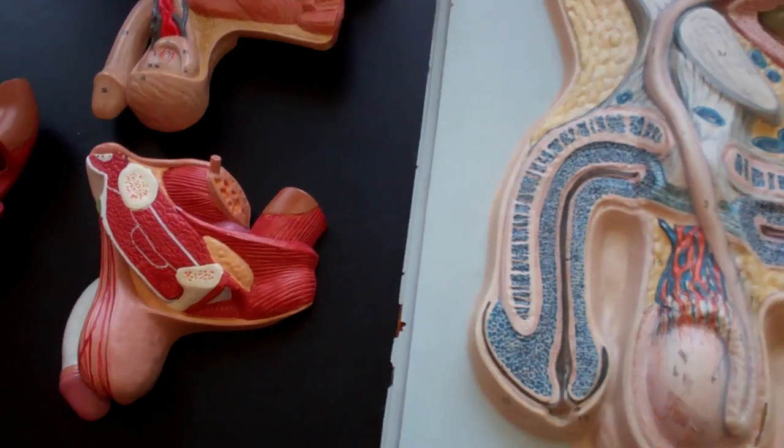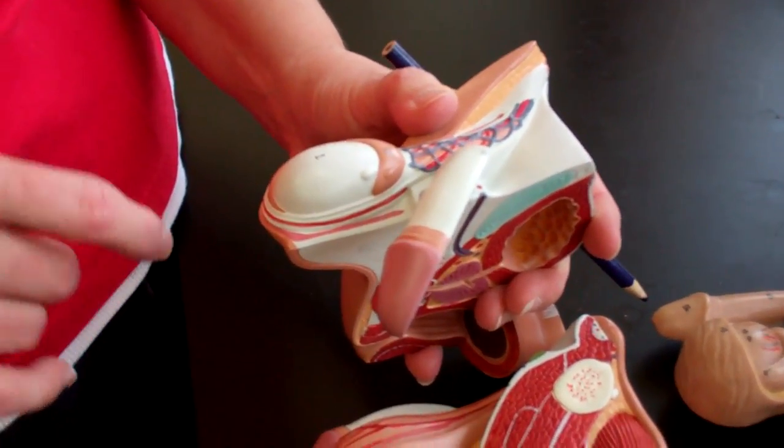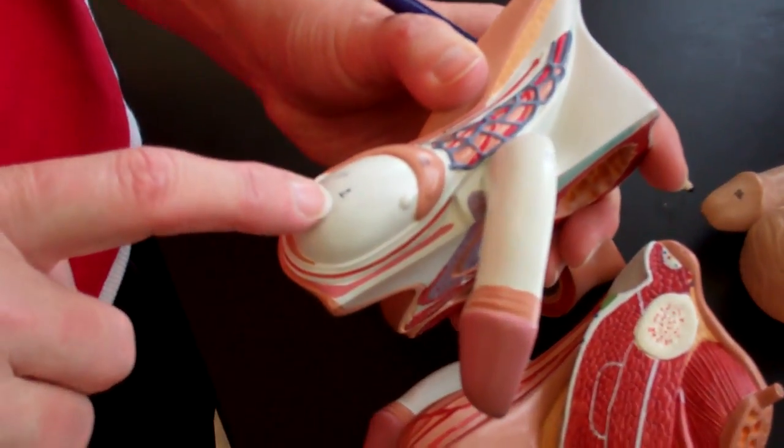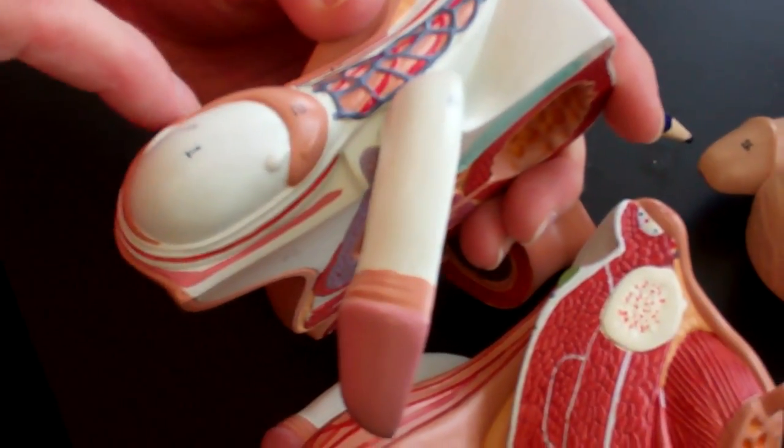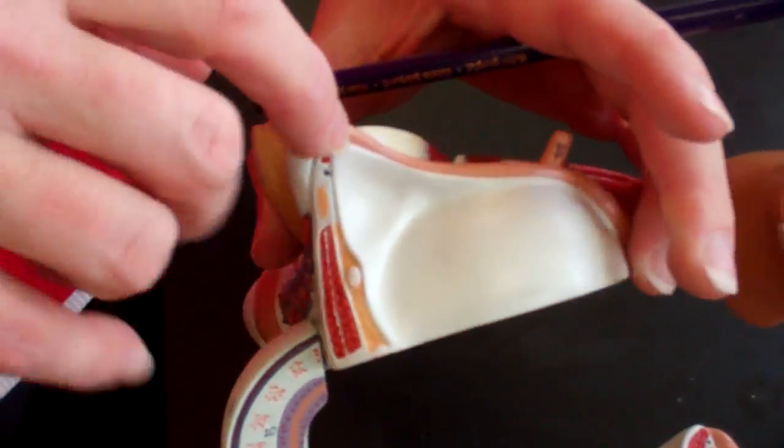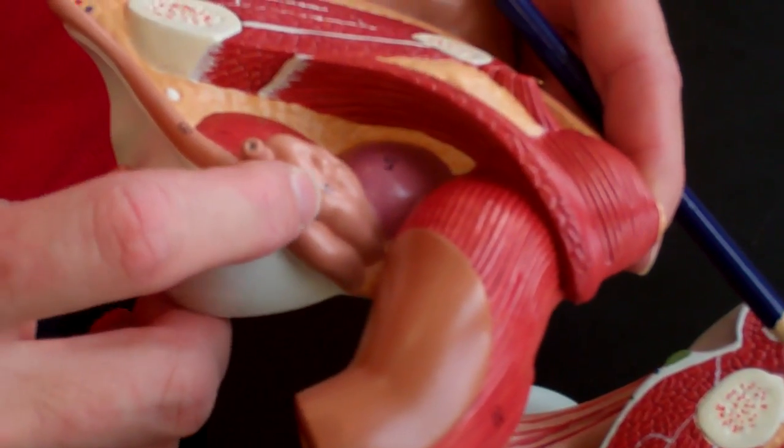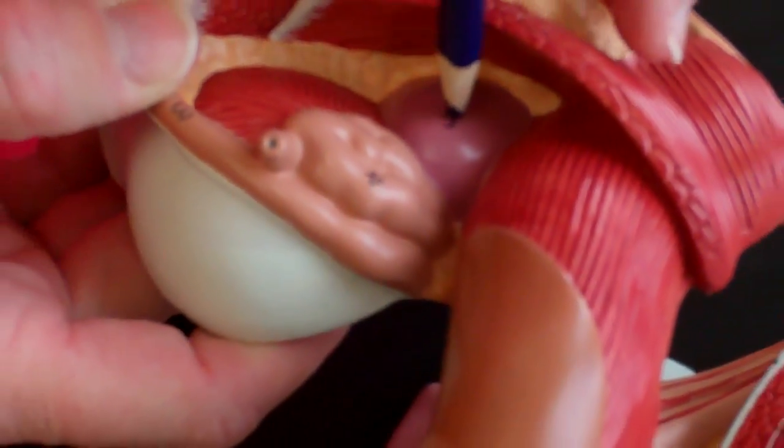And then last but not least, we have a couple of these newer models. The testes, epididymis, and then you'll see the vas deferens actually travels up around all the way back to the back of the bladder. And there's the seminal vesicle, number four. Number five is the prostate. And this is from the back side or the exterior.